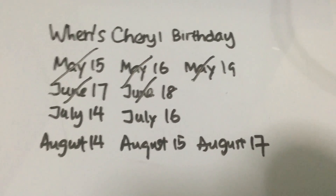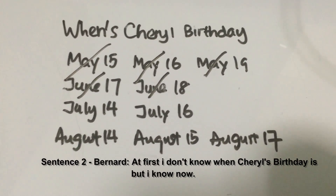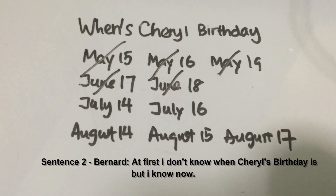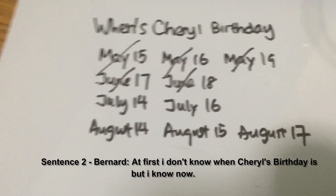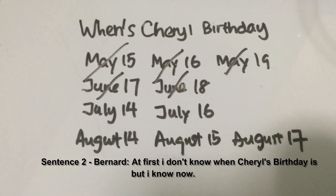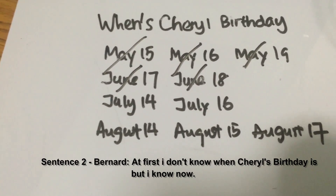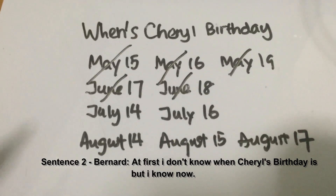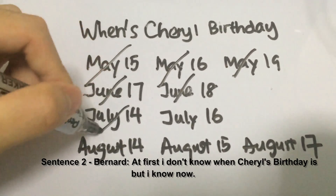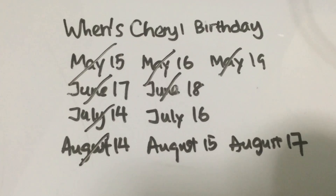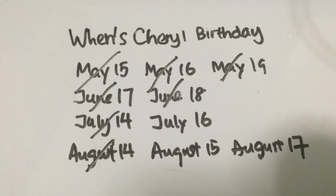After the first sentence, let's look at the second statement whereby Bernard says that at first he did not know when Cheryl's birthday is, but he knows now. You have to think of the opposite scenario — whereby Bernard still does not know. In that case, the date he has is 14, because if the date is 14 there are actually two possibilities, so he still doesn't know. That means we can strike off both July 14 and August 14, leaving the last three possible dates: July 16, August 15, and August 17.